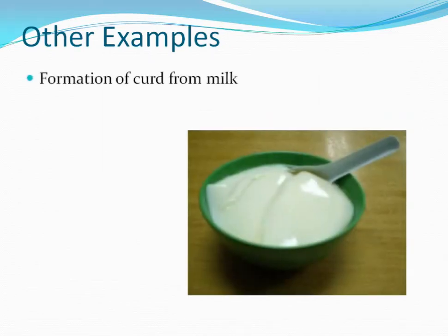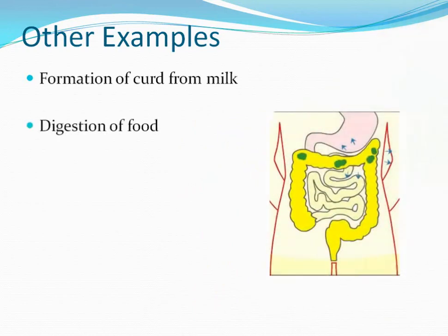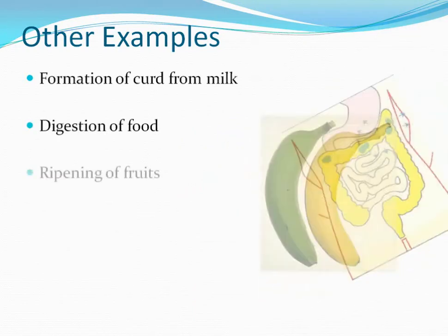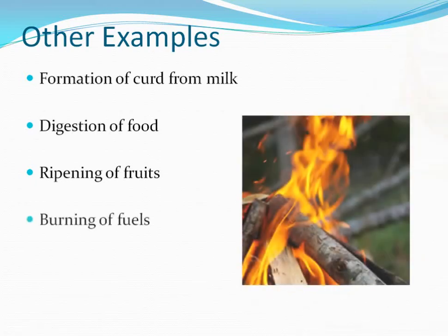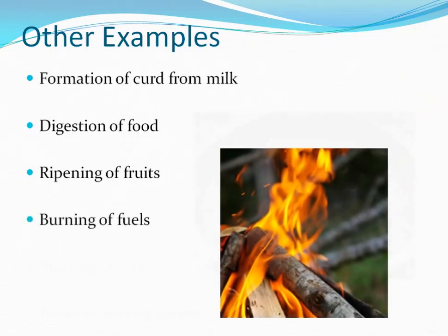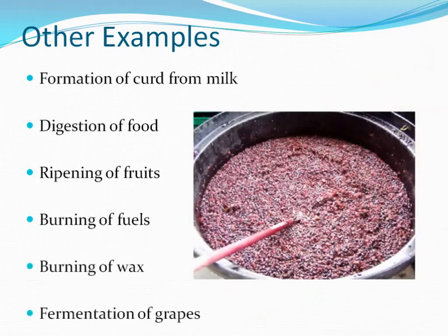Formation of curd from milk is a chemical reaction. Even the digestion of food inside our body is a chemical reaction. Ripening of fruits is a chemical reaction — this green banana becomes a yellow banana after a chemical reaction. Burning of fuels like wood is a chemical reaction. Even burning of wax, or the fermentation of grapes — the preparation of alcohol from grapes — that's also a chemical reaction. So as you can see, chemical reactions are very, very common.